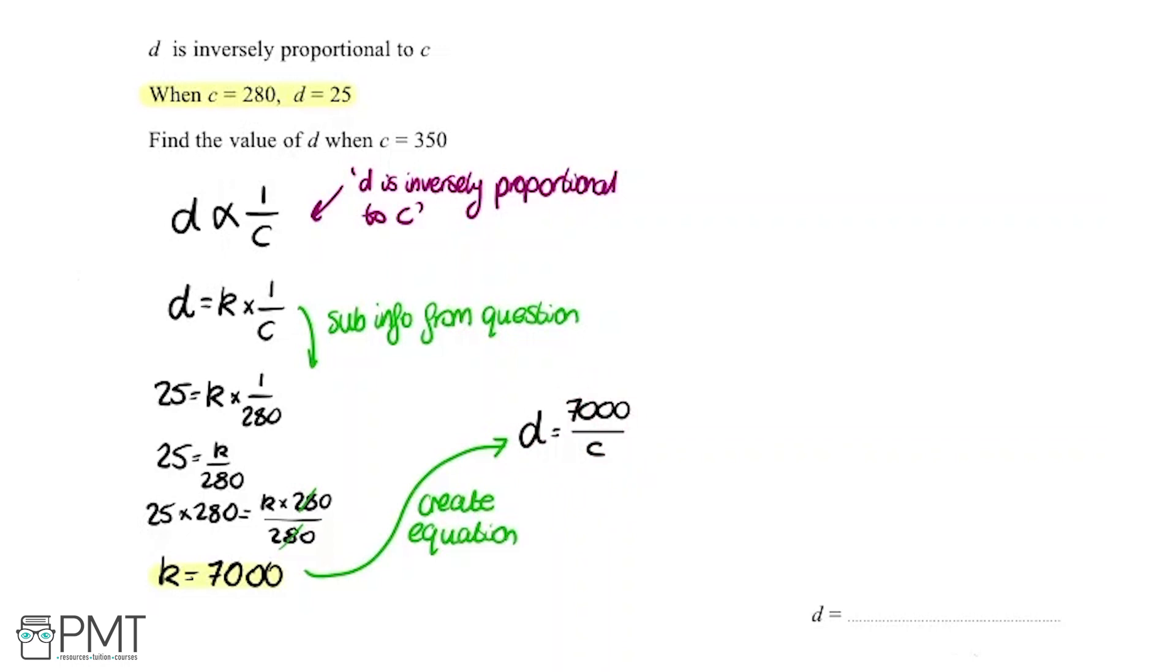So now we get to the final part of the question, which is find the value of D when C is 350. We're going to sub C is 350 and then we'll have a value for D. So we have D is 7,000 divided by 350, which is 20. So our answer here is that D is 20.